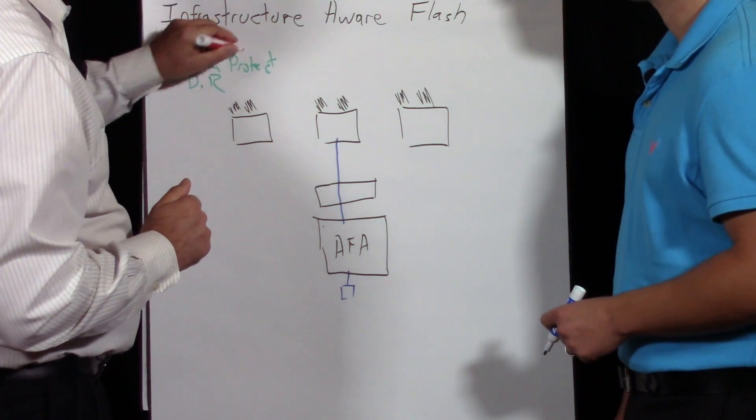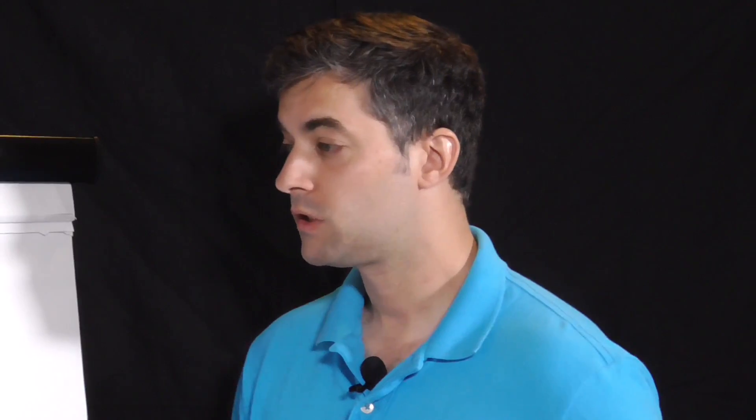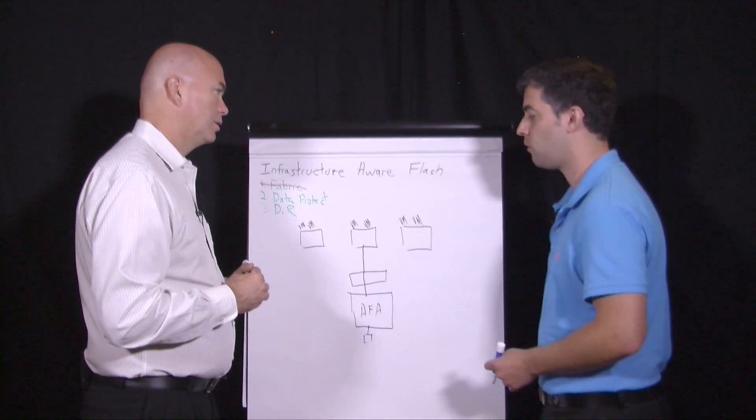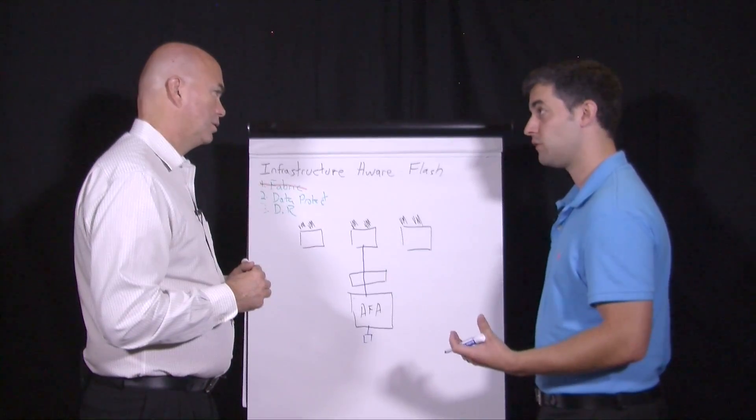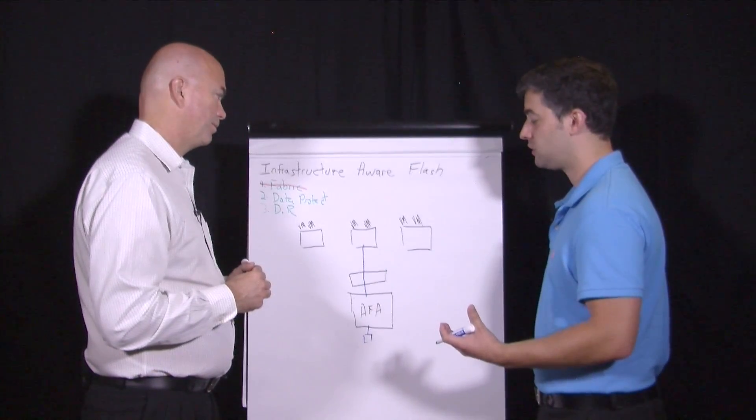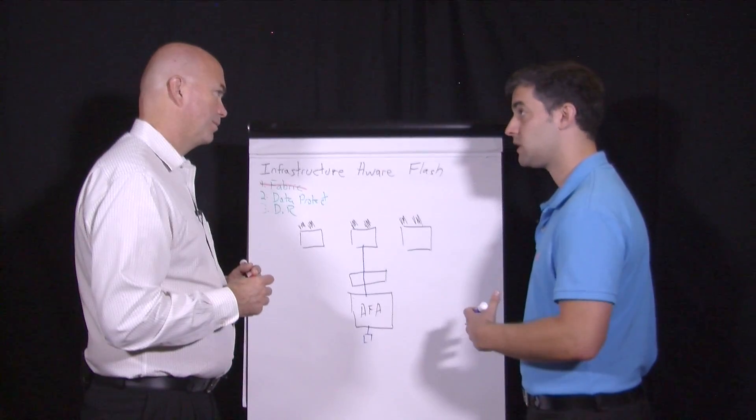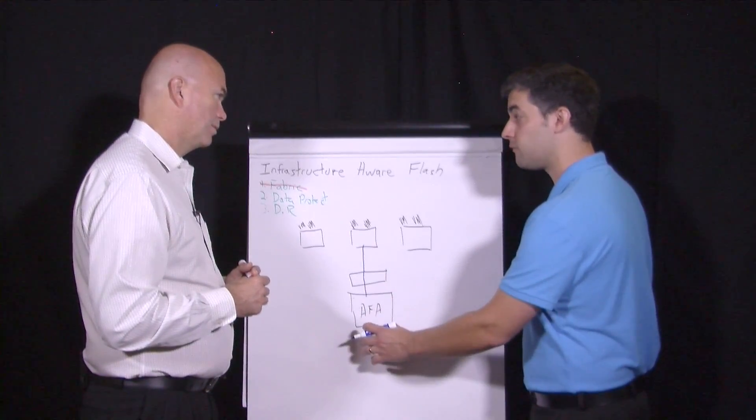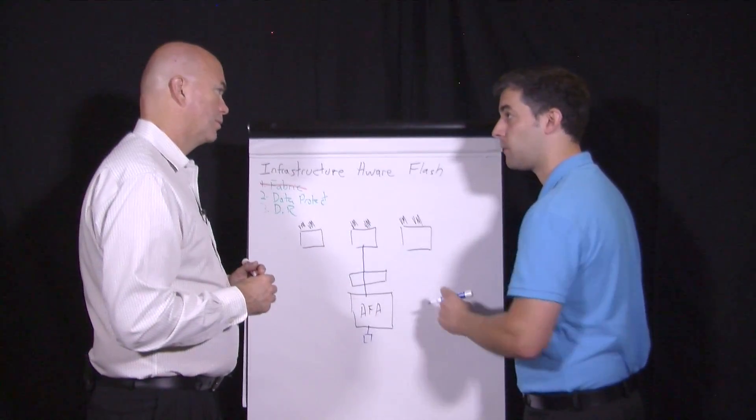That takes care of a lot of the fabric issues. Let's talk about data protection. The obvious one is: how do I take a consistent snapshot of my application, especially in a VM environment, without horrible growth? We have a technology called Recovery Manager Central that allows us to take VM-consistent or application-consistent snapshots on the actual array itself without worrying about holding data on the application.